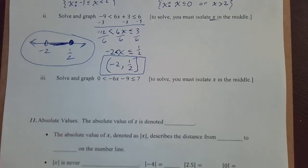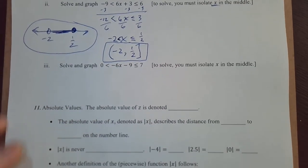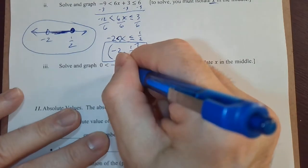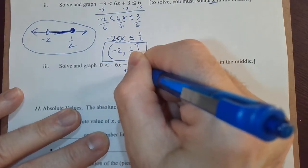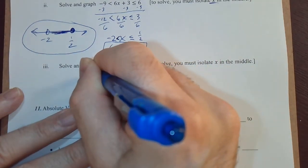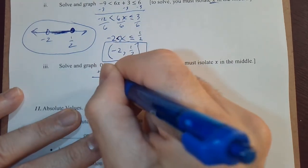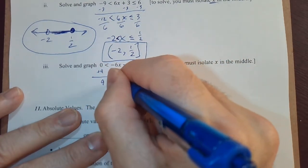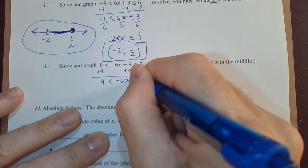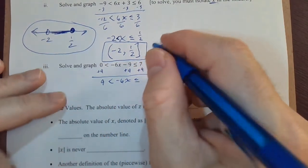Next example. Once again, we need to get x in the middle. So let's add 9 to all three sections and get 9 less than negative 6x less or equal, 9 and 7 is 16.